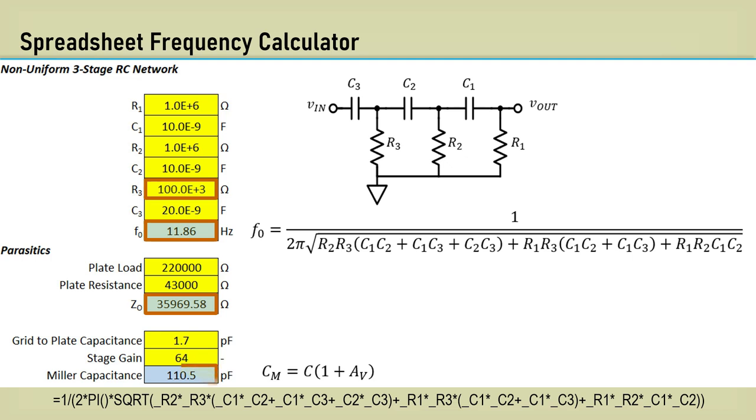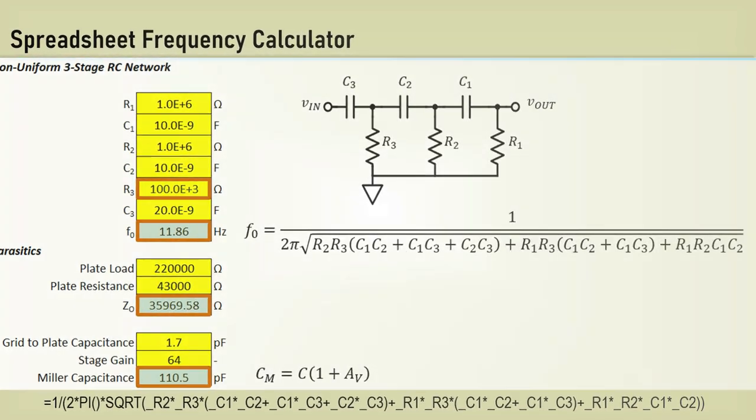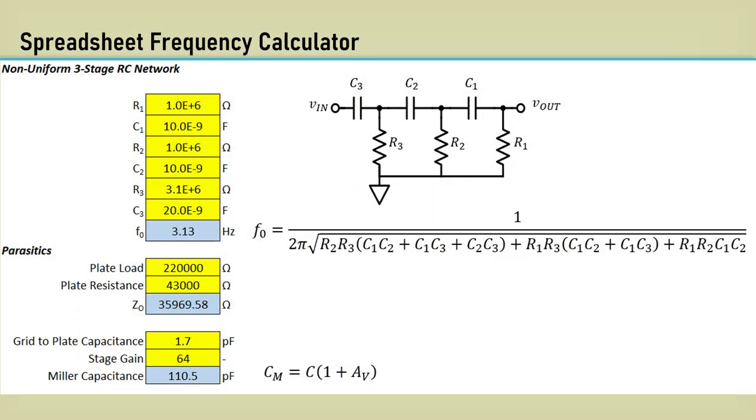The oscillator tube has a high gain of around 64, so the Miller capacitance at the input is about 110 picofarad, which is fairly negligible. When the 3 meg pot is maxed counterclockwise, R3 is 3.1 megaohms, and the frequency is 3.13 hertz.